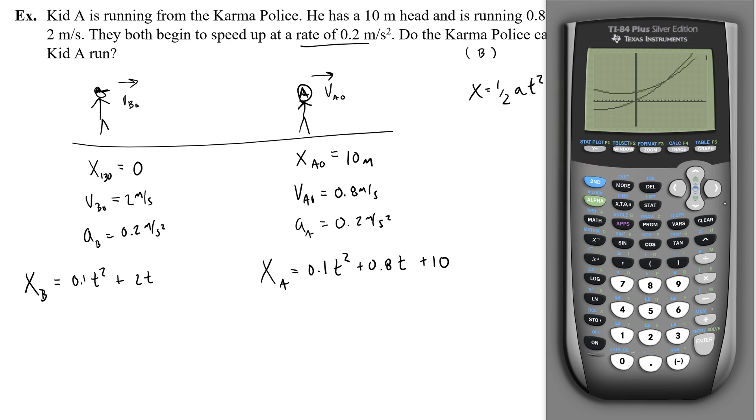Oh, that's it. Oh, the karma police catch kid A. All right, so this is the graph that we're going to sketch to show our work. Let's go ahead and do second calc intersect to find where they collide.